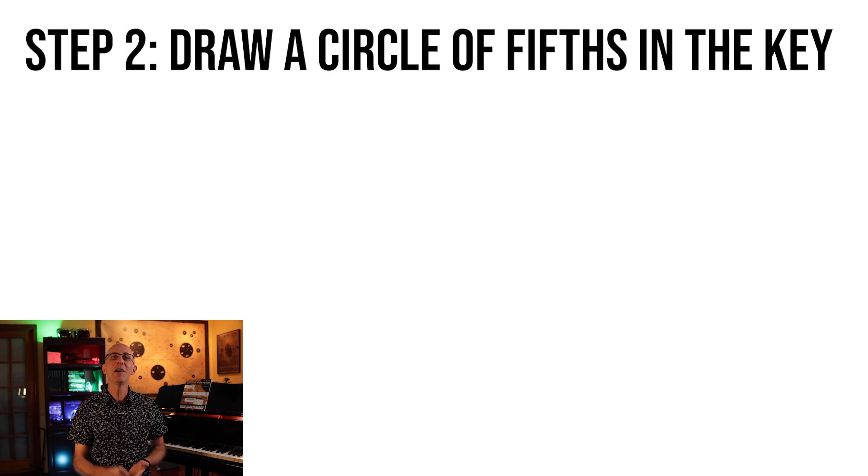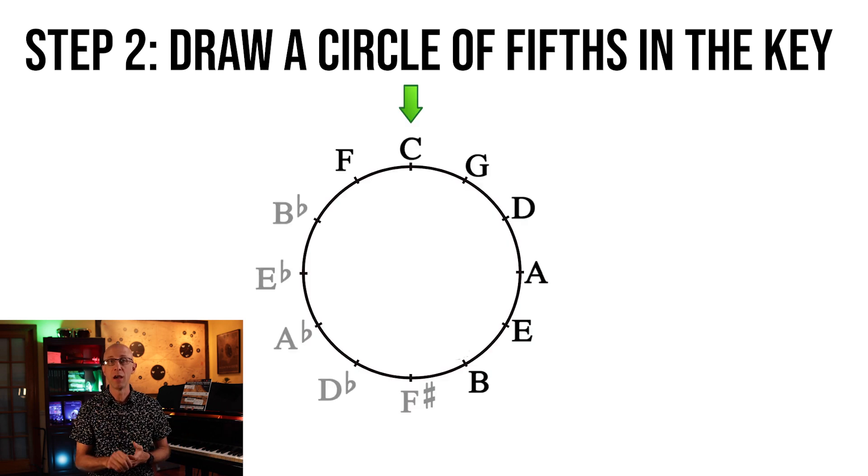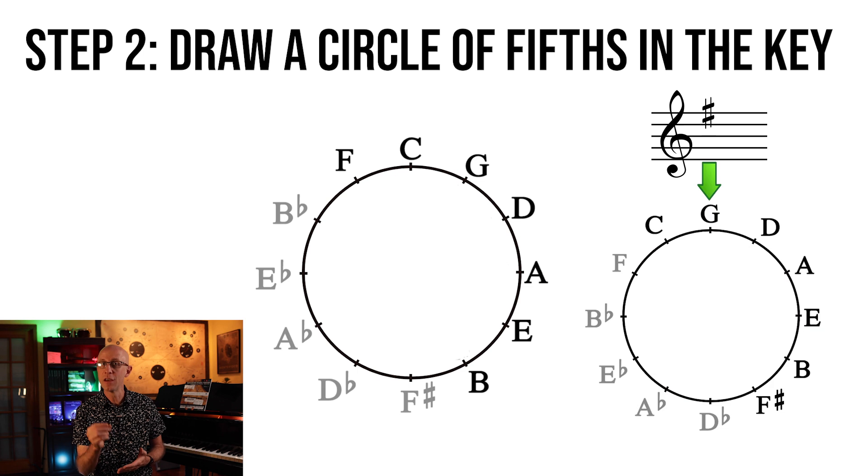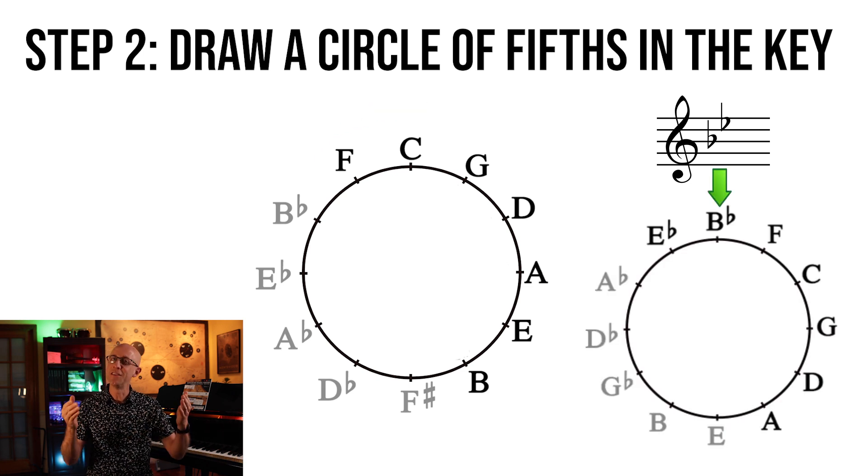Step 2: Draw a circle of fifths in the key of the piece. Yes, it is essential that you know the circle of fifths. It will save you tons of time when studying any music theory related topic. To put a circle of fifths in a key, just draw the standard circle of fifths in C, and then turn it around until the note that represents the tonic of the key is at the top. Let's say we have a piece in G major with one sharp in the key signature. Then all we have to do is rotate the circle counterclockwise once to get the G at the top, and we have a circle of fifths in the key of G major.